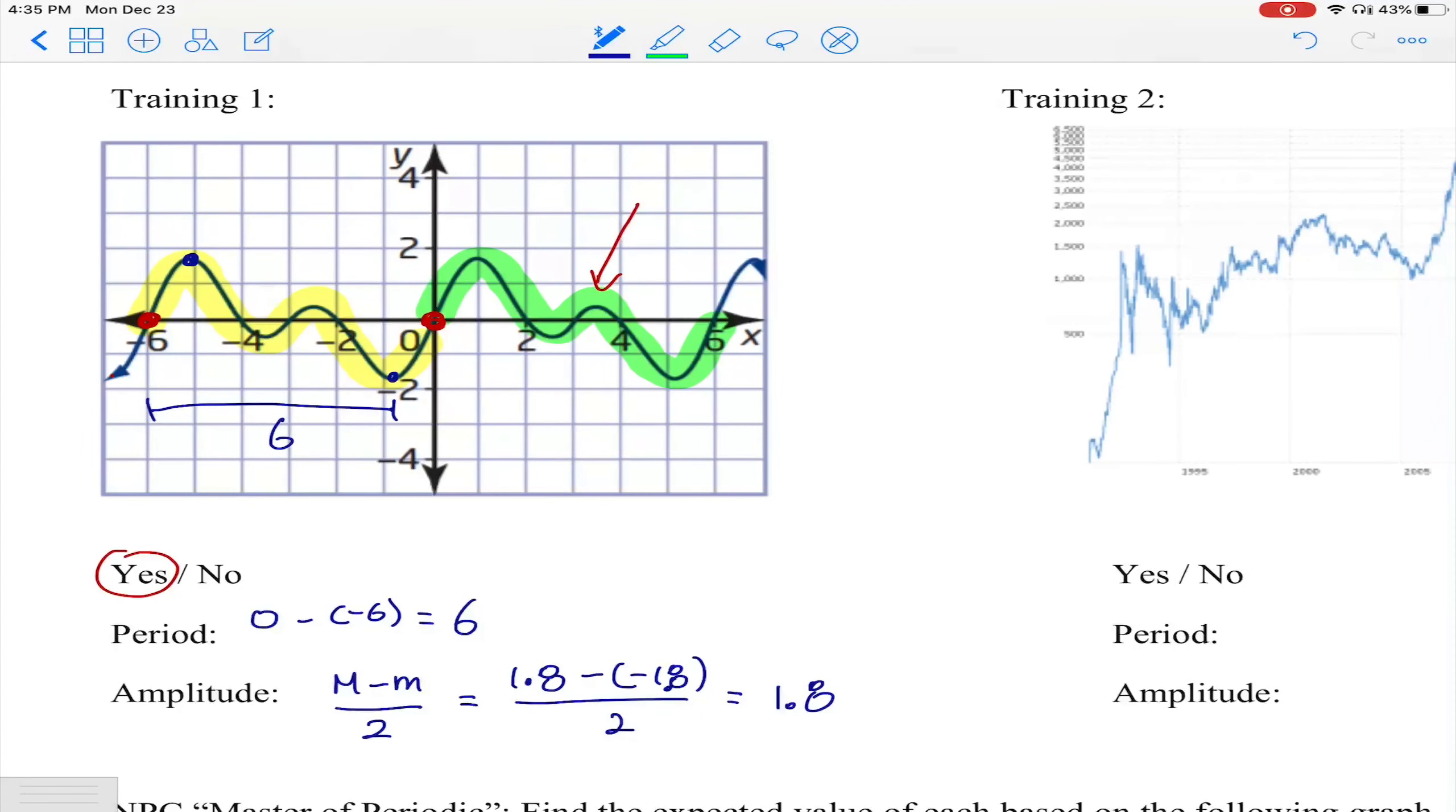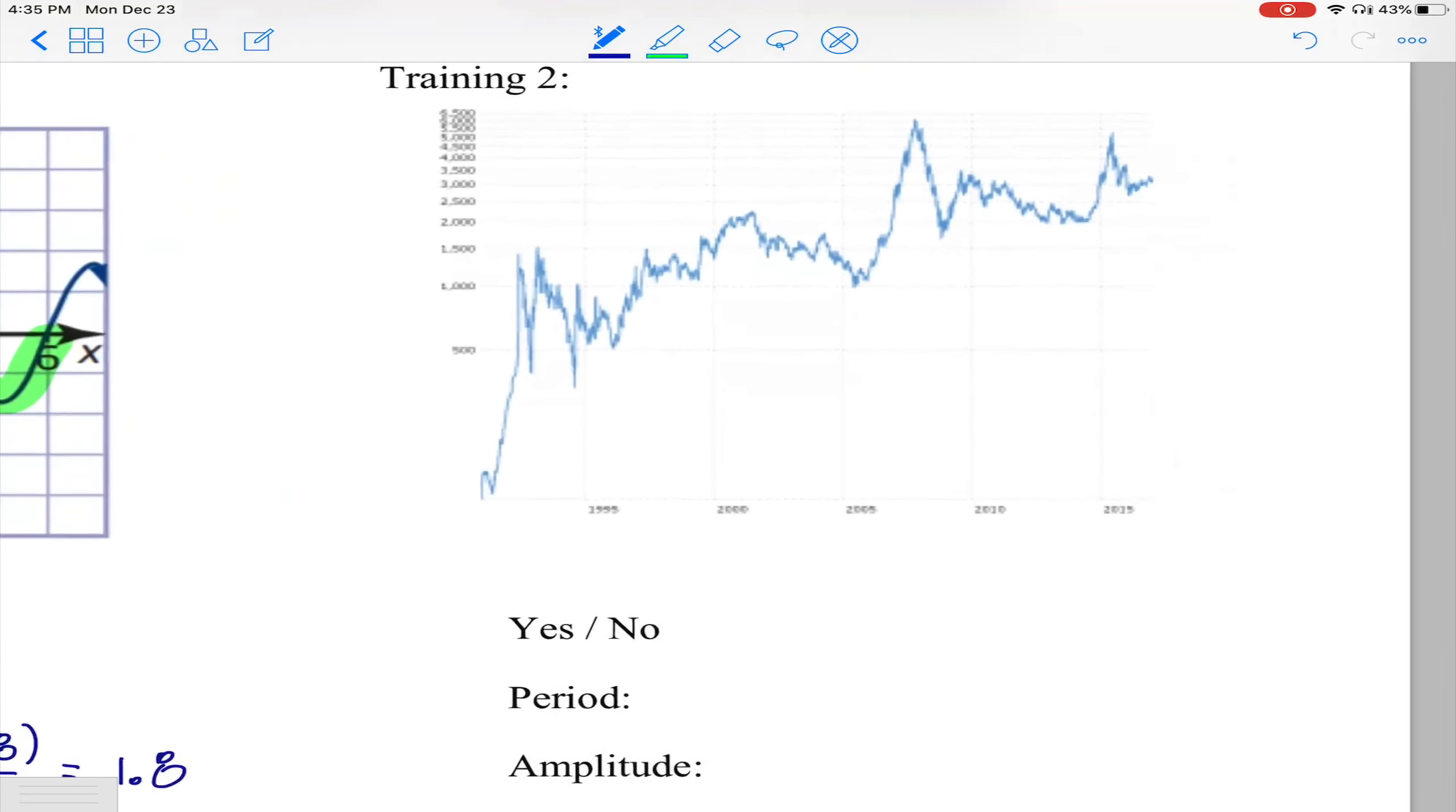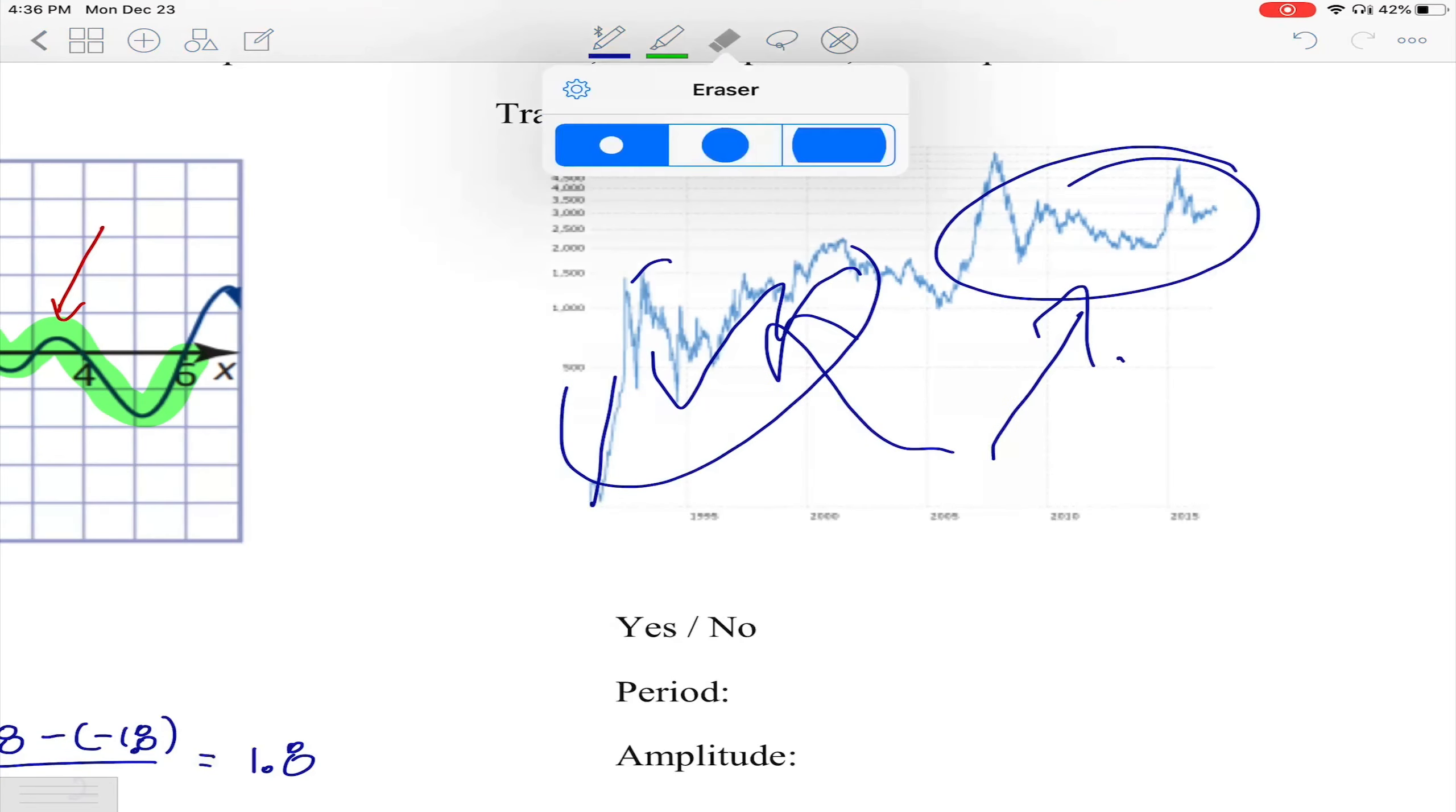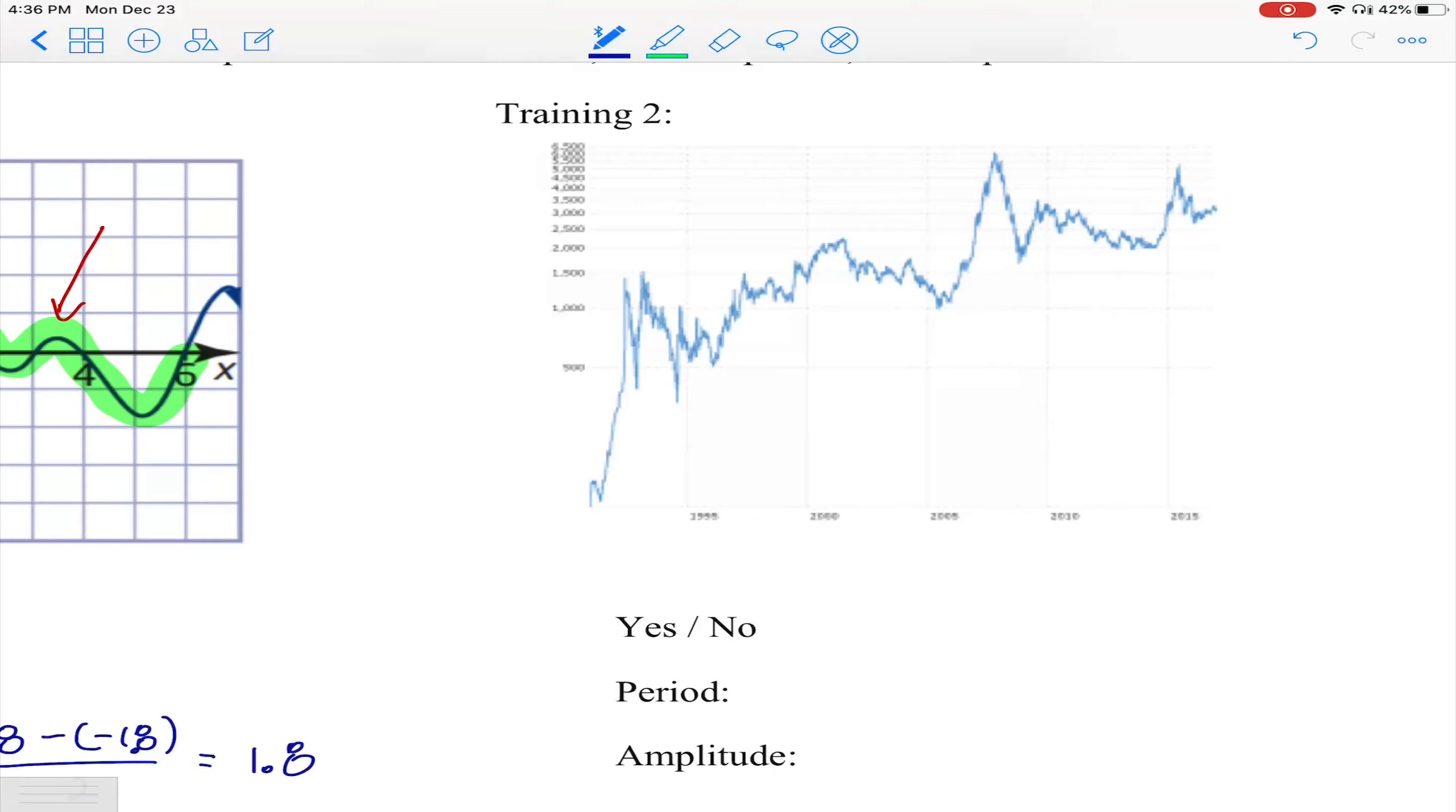Now the next training, training 2 - this graph is not really periodic. There is not really the same cycle repeating over and over. You may see it's going up and down, but the cycle must be identical to another cycle. The cycles here are not even identical to each other, so this is not a periodic function.